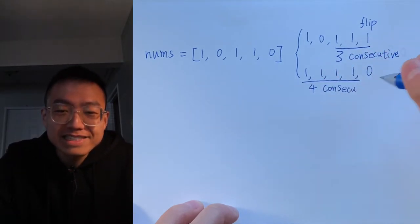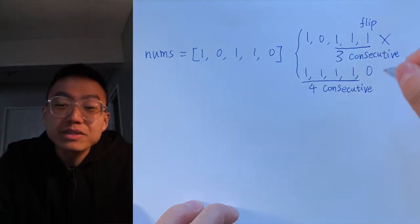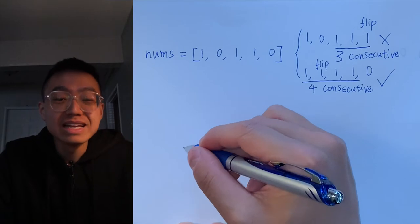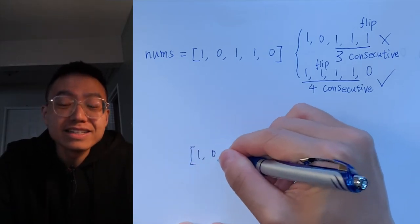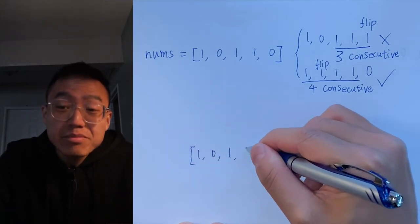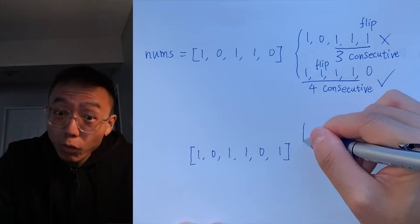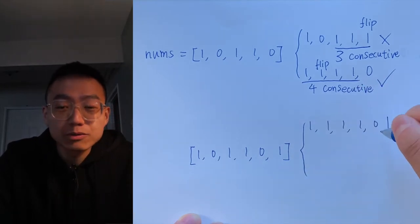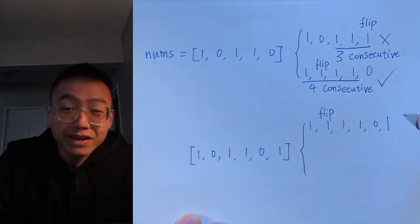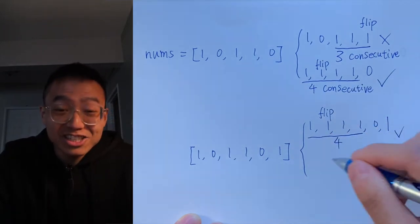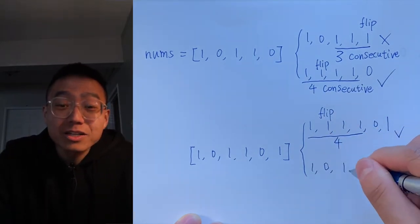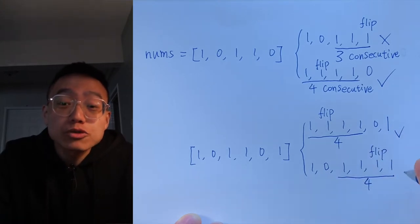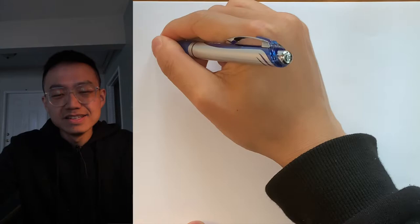For example, in example one, we flip the first zero and we get the max number of consecutive ones. After flipping, the max number of consecutive ones is 4. If we have one zero in our consecutive array, we could flip it to satisfy our condition. We are not actually going to flip the zero, but this makes our approach much easier.